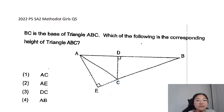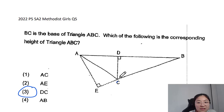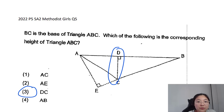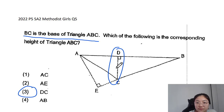Now let's look at some past year papers. Here we have Melody's Girls P5 SA2 last year's question, asking for the height of triangle ABC. Some students might not read the question and go ahead to choose CD as the height, but we've got to read the question. I always encourage my students to read carefully. Because BC is the base and AB is not the base, CD cannot be the height.